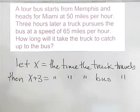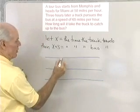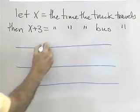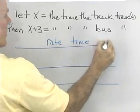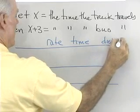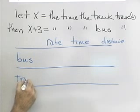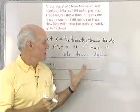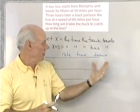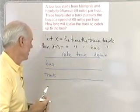Let's set up a table here to organize our information. I'll do a table with rows for the bus and the truck, and columns for rate, time, and distance. What I want to do is fill in this table — some of it using the numbers given in the problem, and other boxes using the fact that distance is equal to rate times time.